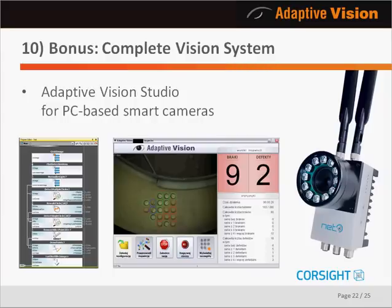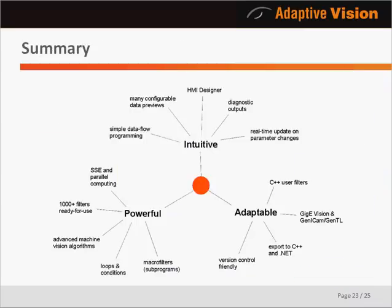Additionally, Adaptive Vision Studio is a perfect match for use with PC-based smart cameras such as Coresight models. Together, the products deliver an all-in-one bundle that features easy installation and greatest flexibility. In summary, Adaptive Vision Studio is strictly designed for professional machine vision engineers and is the only machine vision software that is simultaneously intuitive, powerful, and adaptable.